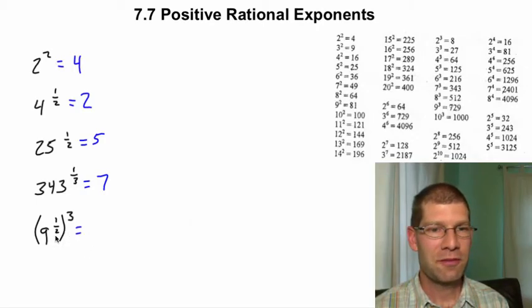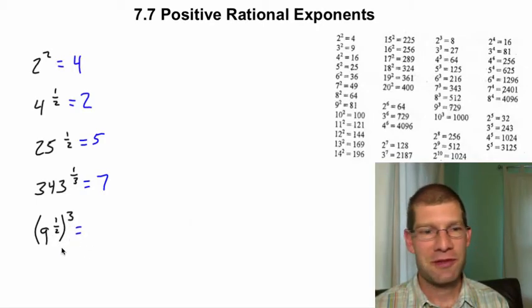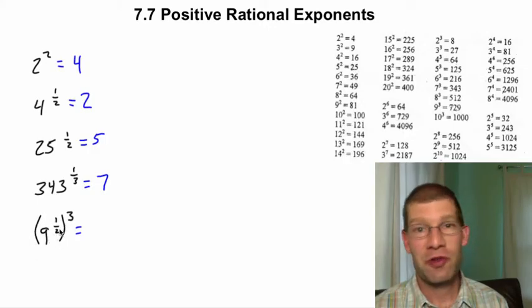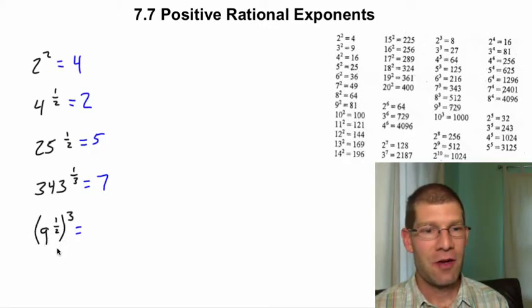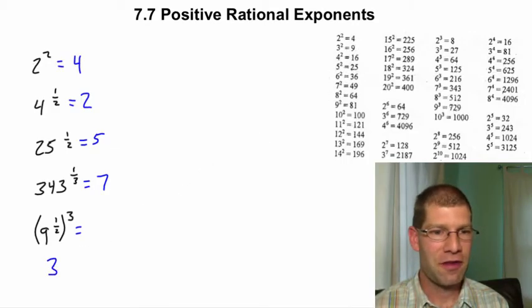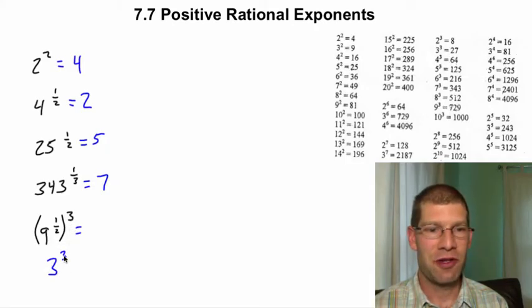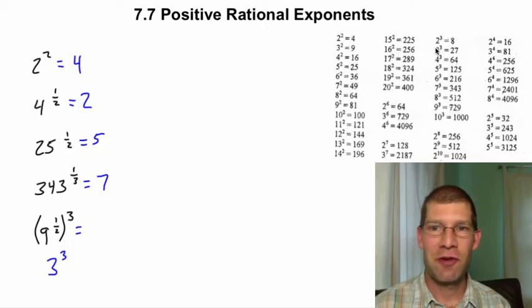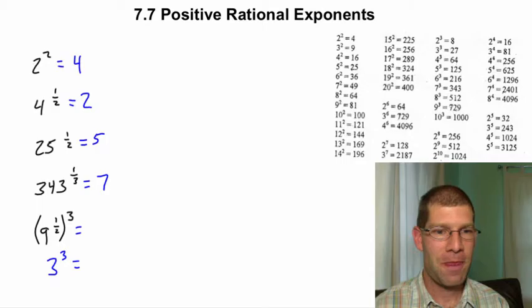This one here, now we have it in two steps. We're saying, inside the parentheses, what squared is 9, that's 3 over here, so we have a 3. Now we still need to take care of the 3 as an exponent, so 3 to the third. If you don't know that, you jump over to your third power column, 3 to the third is 27. So then this one here would equal 27.